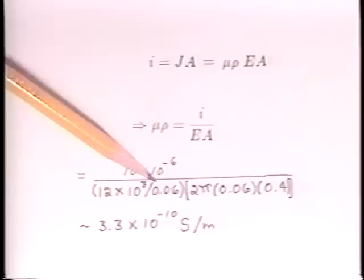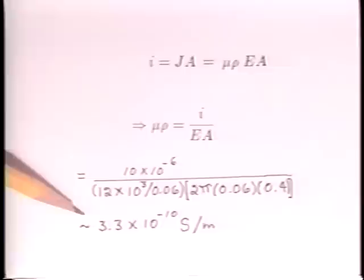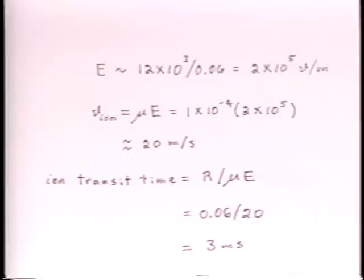The cylinder area is 2 pi times the radius times a height of 0.4 meters. The effective conductivity is therefore about 3.3 times 10 to the minus 10 Siemens per meter. The electric field is 2 times 10 to the fifth volts per meter. The mobility of air ions is about 1 times 10 to the minus 4 meters per second per volt per meter. The velocity of an ion with a voltage at 12 kilovolts is therefore about 20 meters per second. The time required for an ion to cross from the wire to the cylinder to travel the radius r of 6 centimeters is about 3 milliseconds.